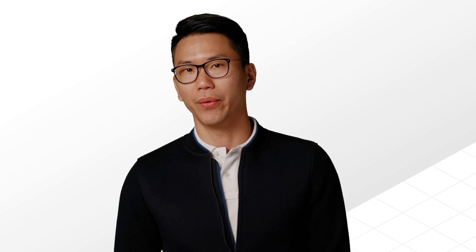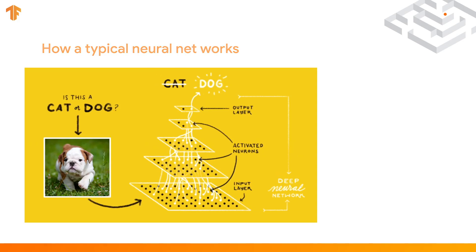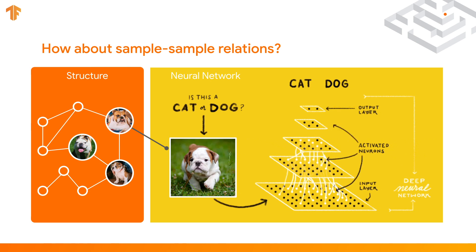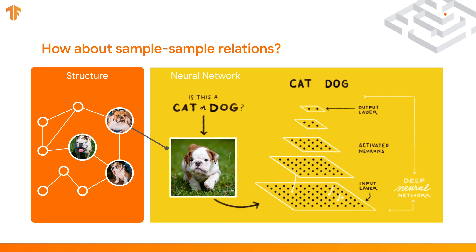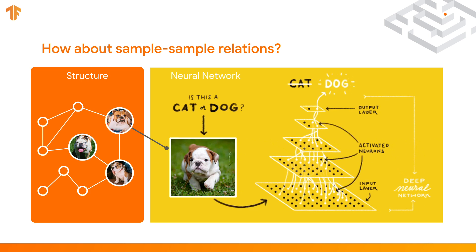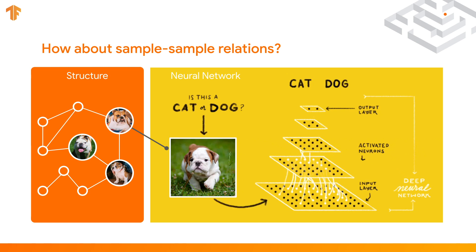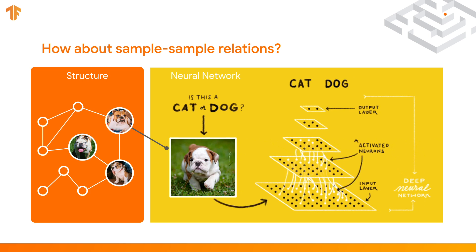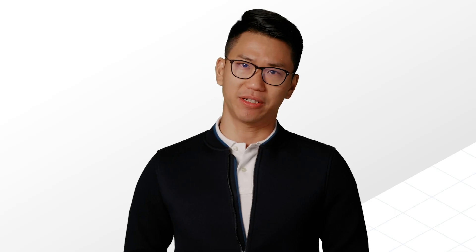What if I tell you there are other similar images related to this input image? That is, there is actually a structure — for example, a graph — representing the similarity among all these images. And as you can see, all these images are English bulldogs. So is it possible that we can make a neural net learn better with the whole structure in addition to just using one image? And the answer is yes, through the Neural Structure Learning framework.